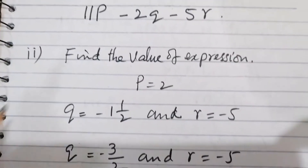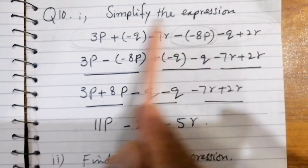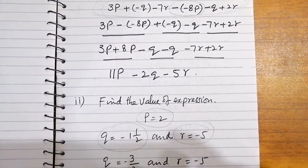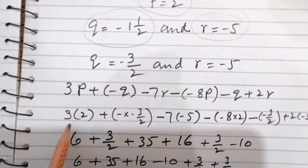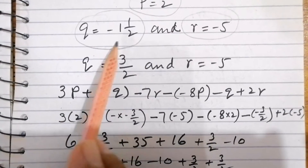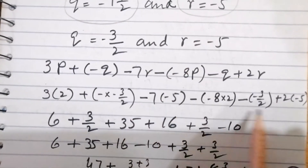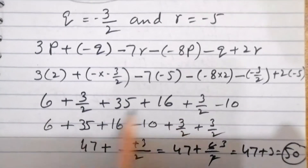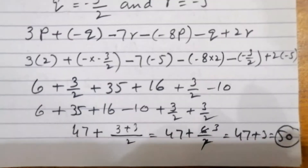Part 2: find the value of the expression. Values are given: p = 2, q = -3/2, r = 5. We take the expression from part 1 and substitute: 3p + (-q - 7r) with p = 2, q = -3/2, r = 5. Placing all values and solving the calculation, the answer is 50. Students are asked to do all the calculations themselves.